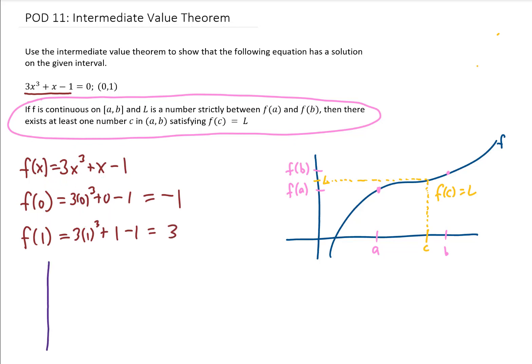So what we have here is some function, and between the x values of 0 and 1, we know that this function goes from a y value of -1 up to a y value of positive 3. Well, the intermediate value theorem says that since this function is continuous, we know that this function's y value must pass through 0 somewhere, no matter how we draw it.